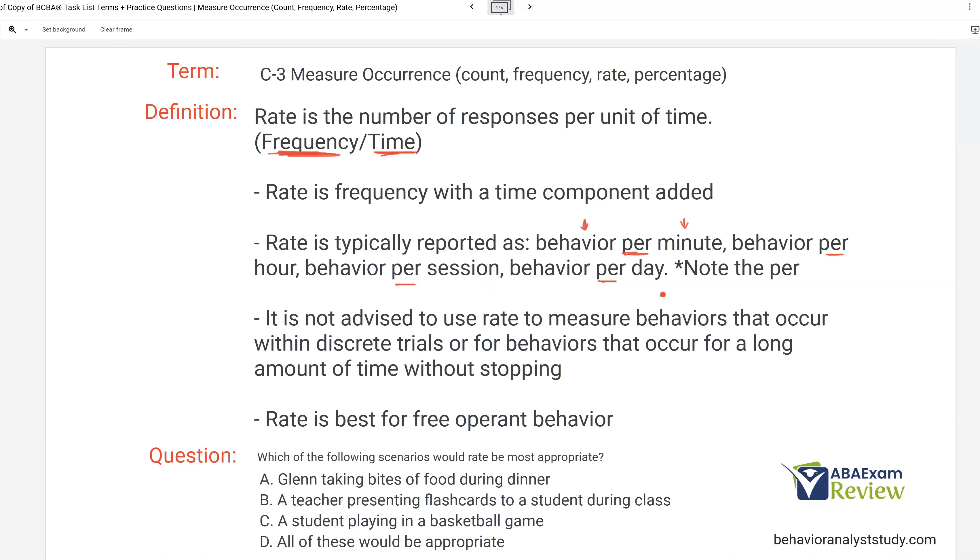And really make note of the per. If we're missing that per amount of time, it's likely not rate. Be very careful about using rate and frequency at the wrong moment and interchangeably. On the exam, you're going to have to be specific about which one you mean. It is not advised to use rate to measure behaviors that occur within discrete trials.